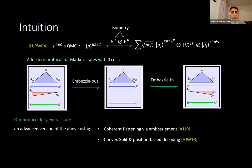To redistribute register C, Alice and Bob can condition on J and J prime, decouple the systems, then embezzle the same system. Our protocol is an advanced version using coherent flattening via embezzlement, convex split, and position-based decoding techniques to make this work for arbitrary states. That's all I wanted to say. Thank you.